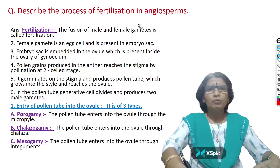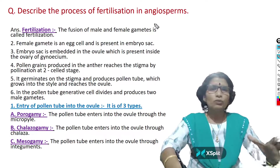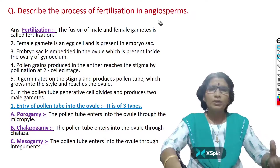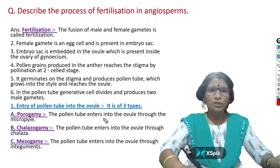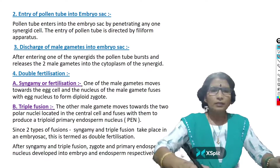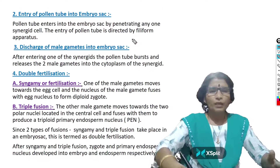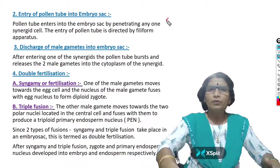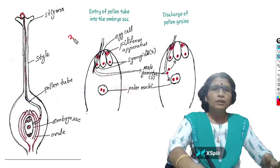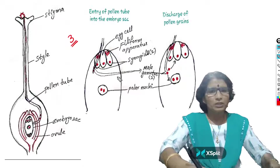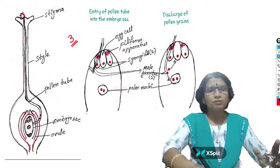The question is: describe the process of fertilization in angiosperms. To answer this in an examination, the answer is available on two slides. If you write all the description, you will get five marks. If you draw the diagrams, three marks will be given. So the description is worth five marks and the diagrams are worth three marks.